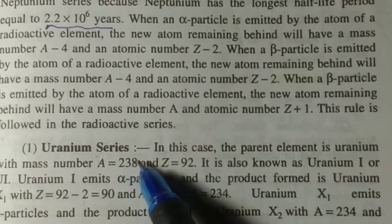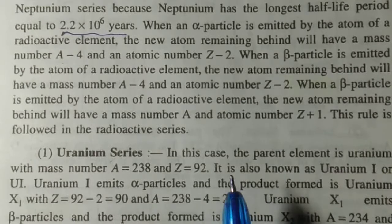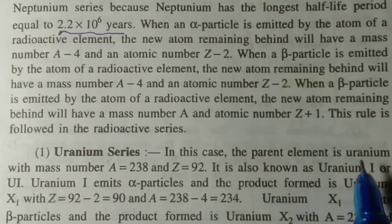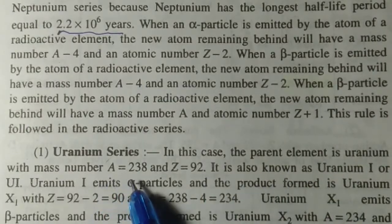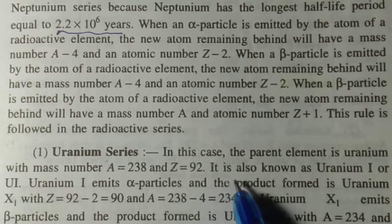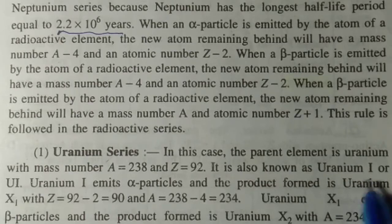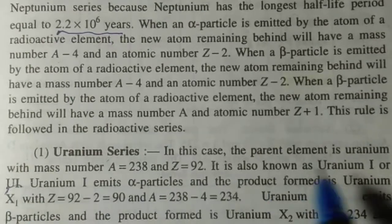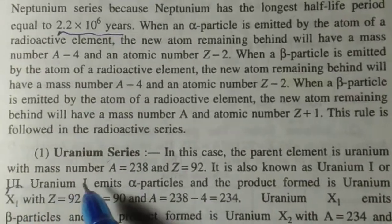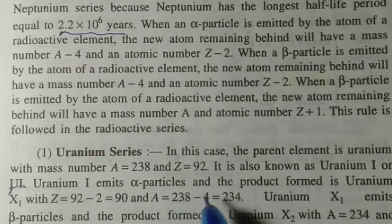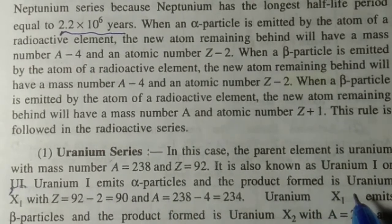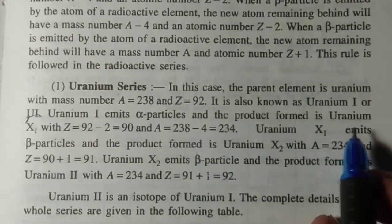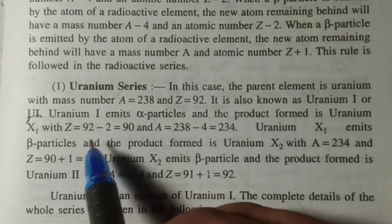The first is uranium series. In this case the parent element is uranium, with mass number A equal to 238 and Z equal to 92. It is also known as uranium first or U-first. Uranium first emits alpha particles and the product formed is uranium X1 with Z equal to 92 minus 2 equal to 90.